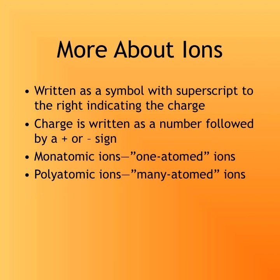When we write formulas of ions, we write the element symbol and then as a superscript to the right we write its charge. A charge is written as a number followed by a sign — positive or negative — depending on whether it's a cation or anion. Writing the sign before the number is an oxidation number, which is a different concept. A charge is properly written as a number followed by a sign.